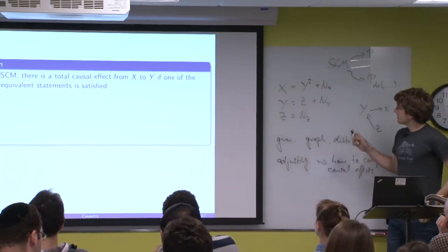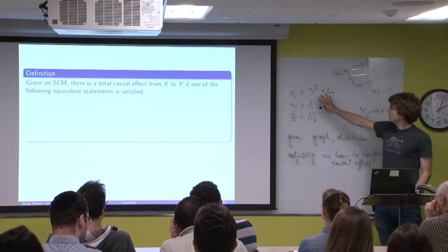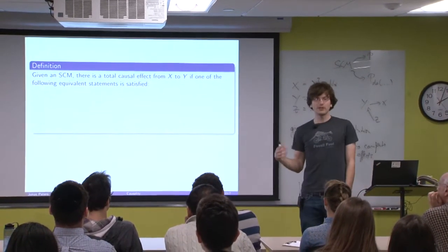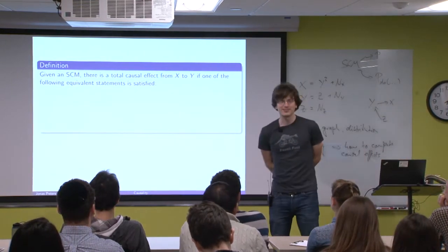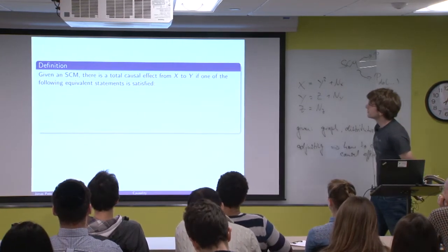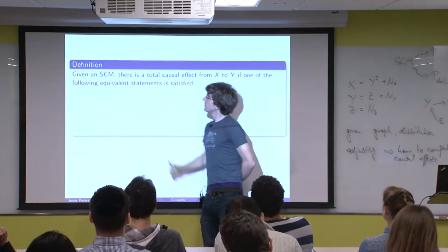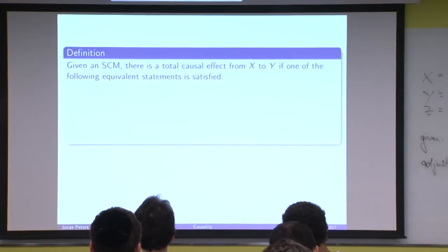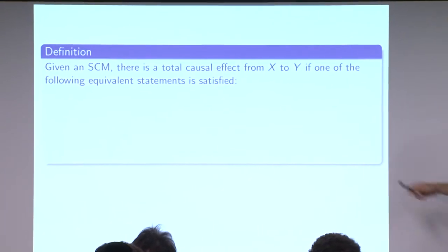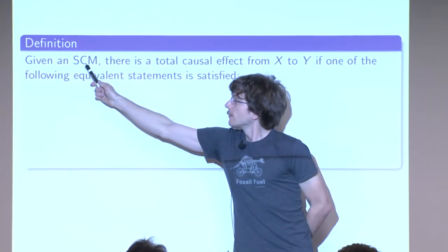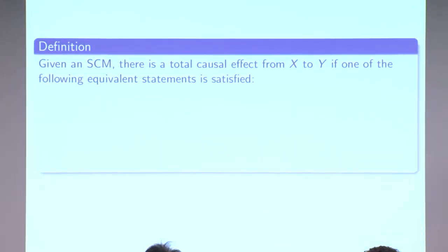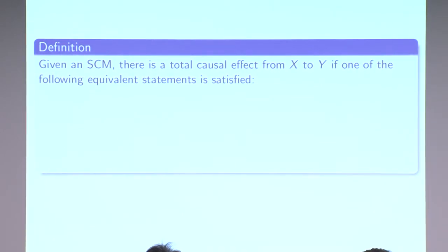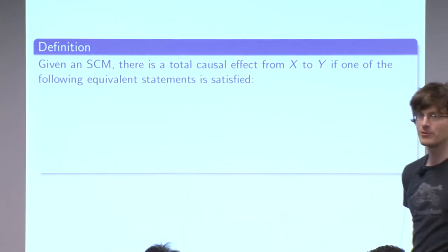Something you may want to do is even in non-linear settings, be able to say what is actually a causal effect - when is one random variable causing another? I'm asking for suggestions. We need to make a definition. It turns out there are a couple of equivalent definitions. The goal is to have a sensible way of saying when x causes another variable. Given a structural causal model, we want to define a total causal effect.